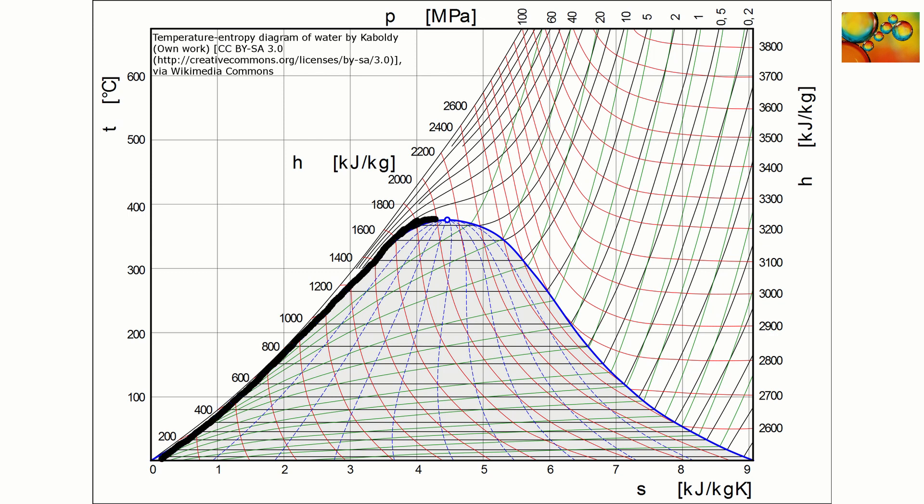Throughout the presentation we will use thick black lines to highlight features of the diagram. Here we highlight the saturated liquid line and here we highlight the saturated vapor line. Between them we have a two-phase region. If a system is represented by a point within this region, it will have a liquid phase and a vapor phase.